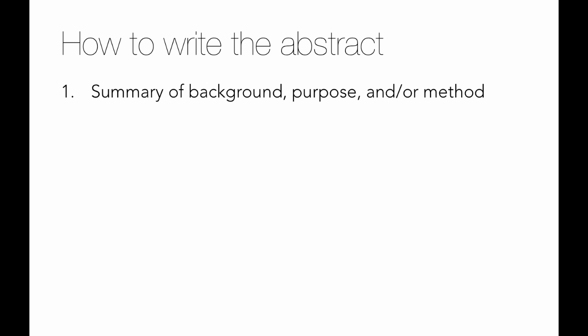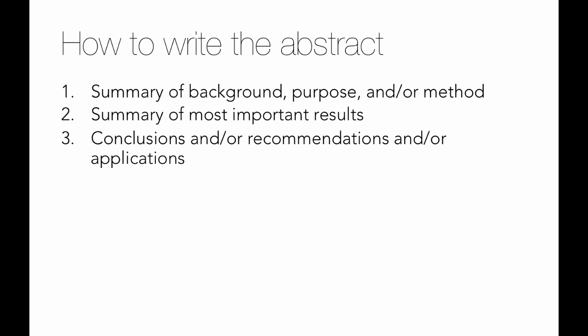The abstract should contain these things: first, a summary of the background, the purpose, and maybe the method; next, a summary of the most important result; and finally, a summary of what is useful or important about it, like applications for example.